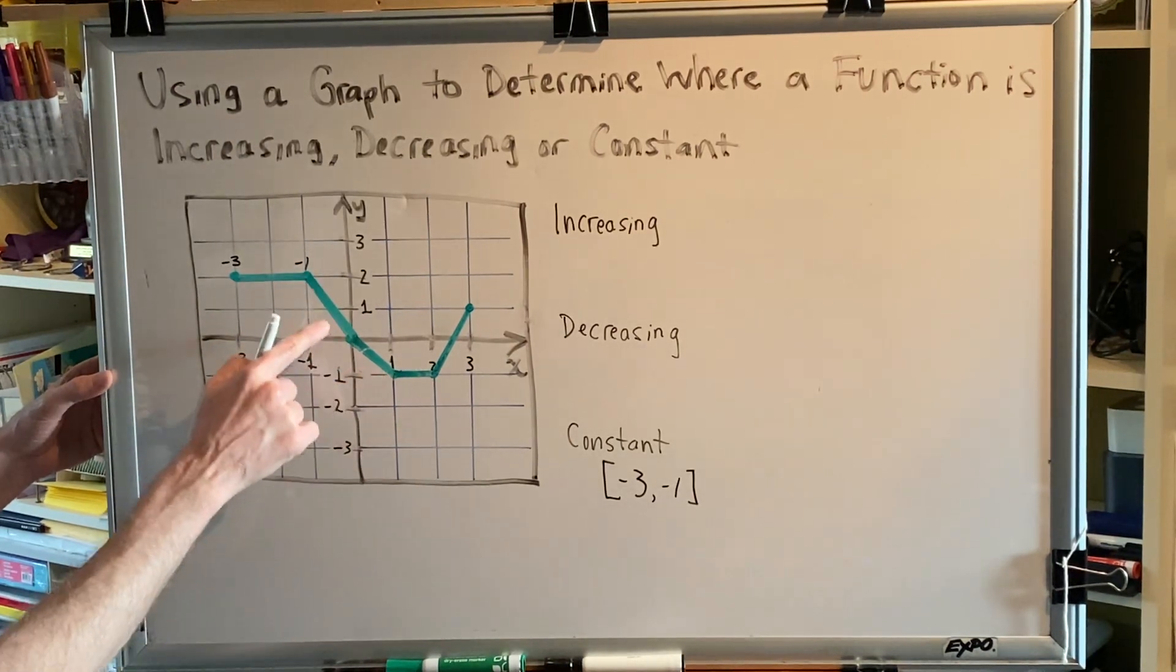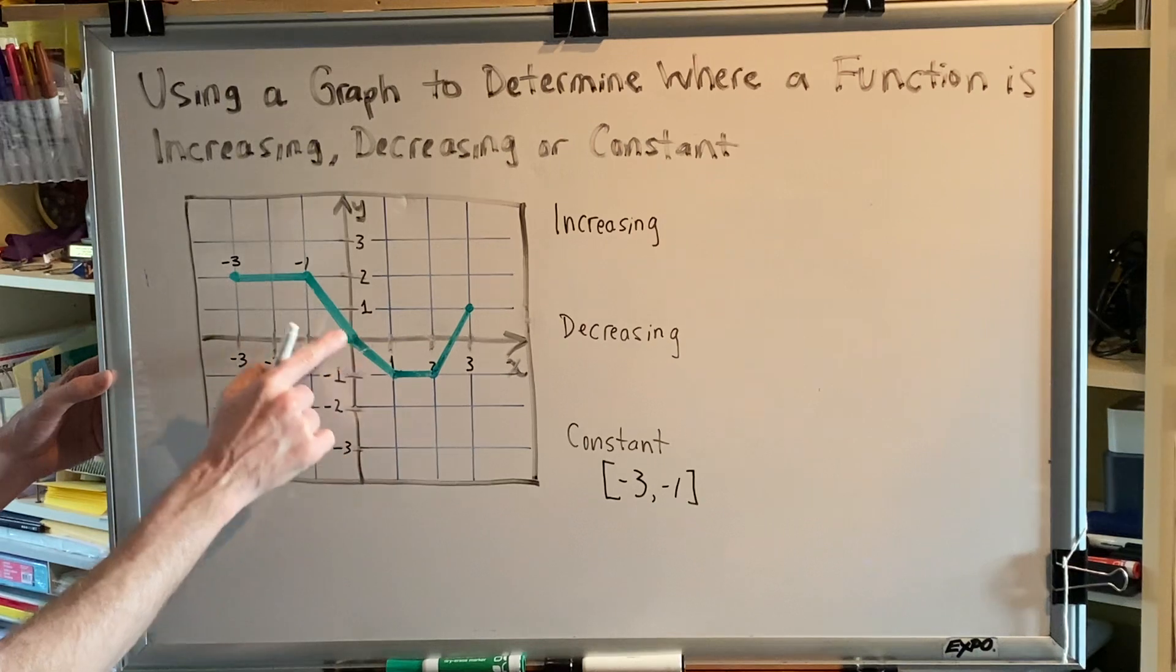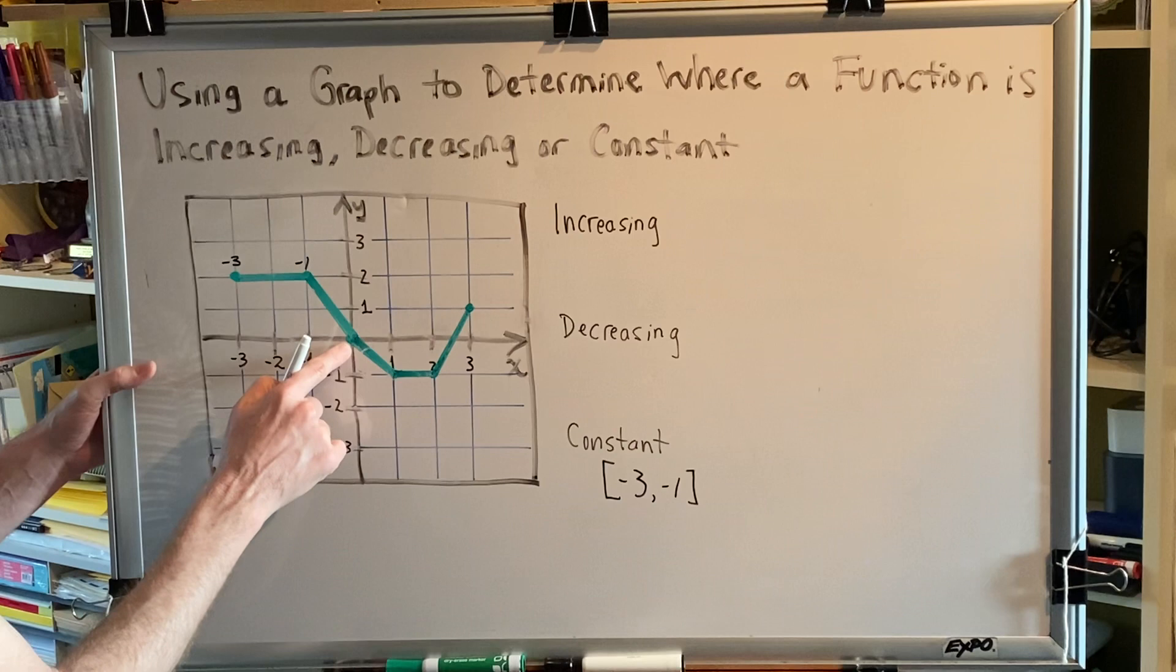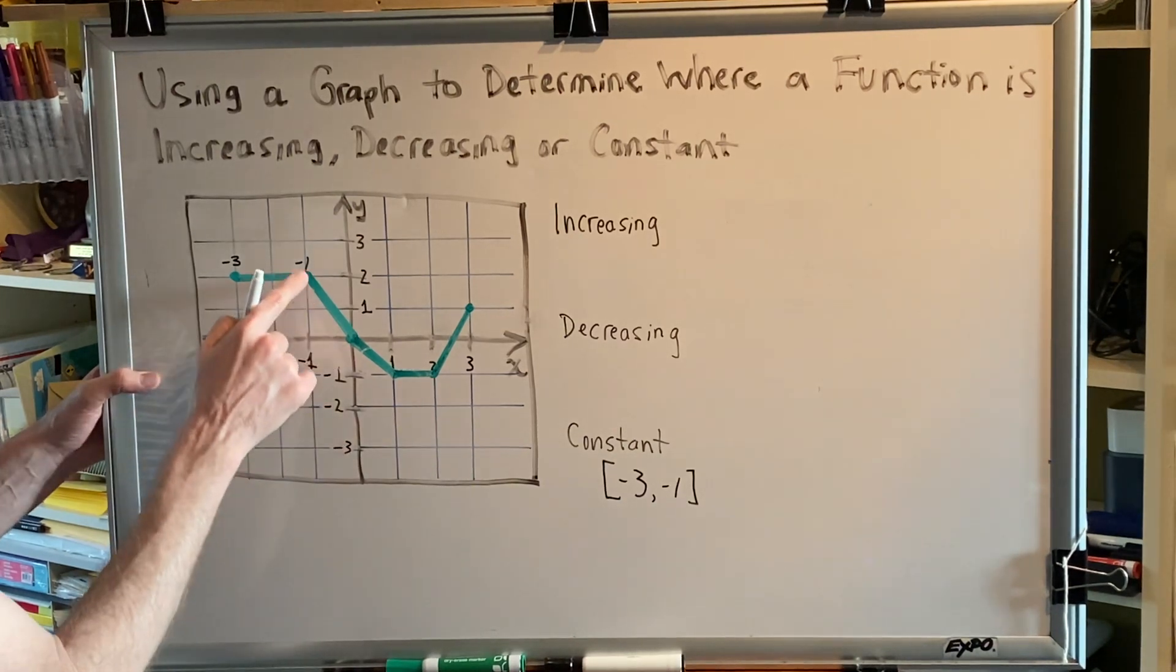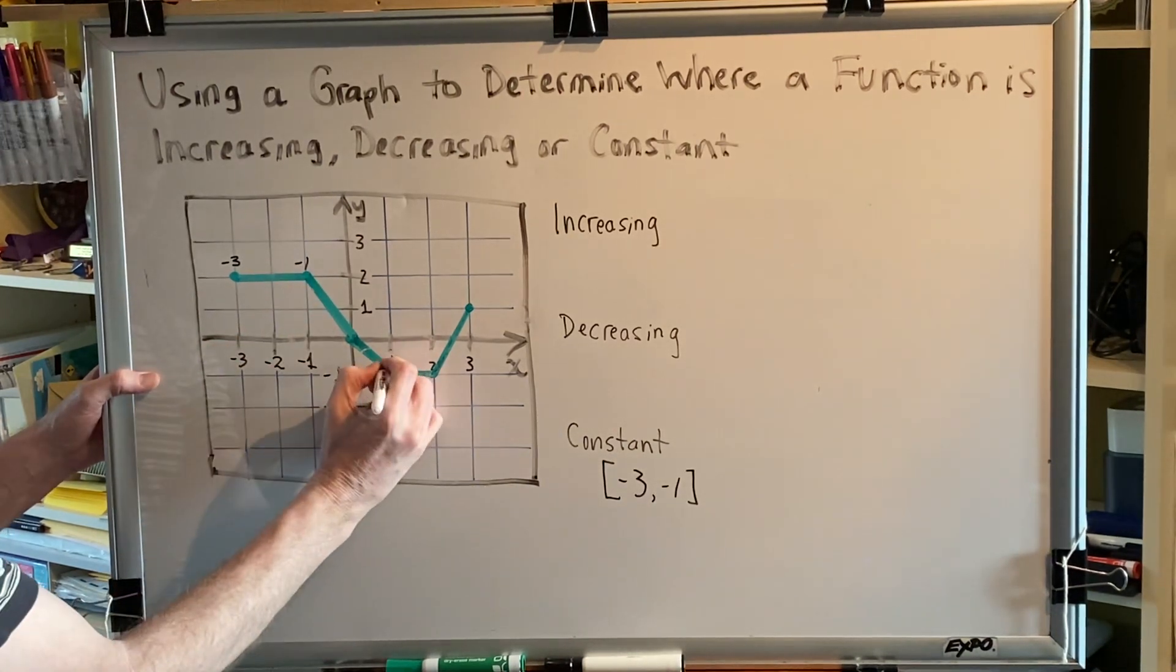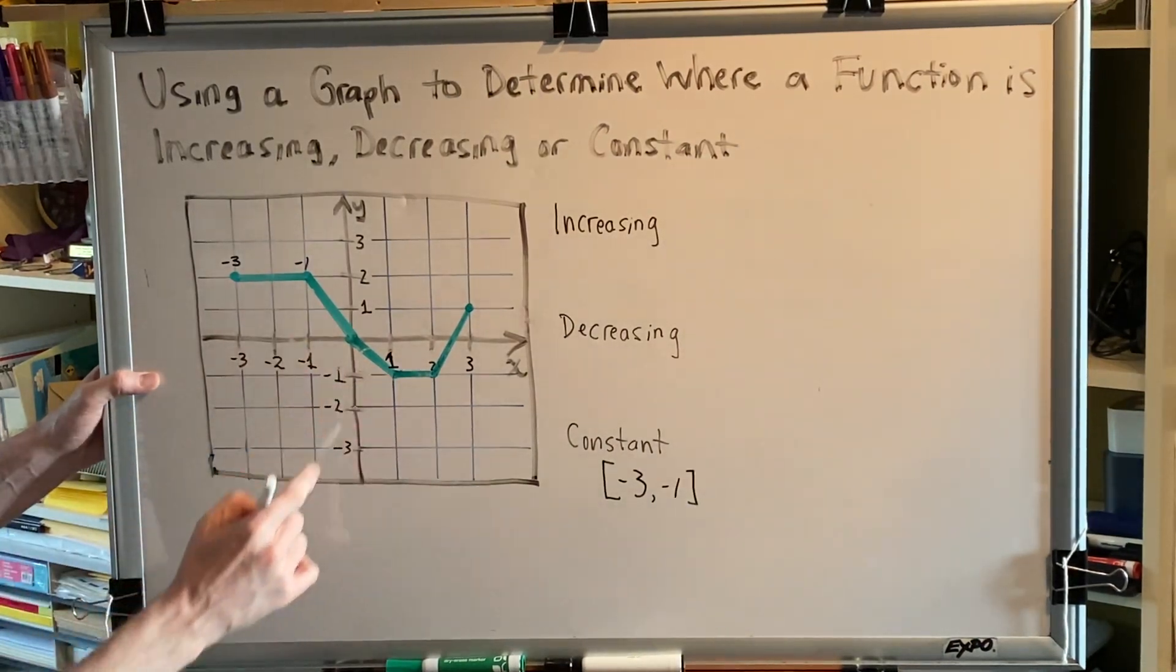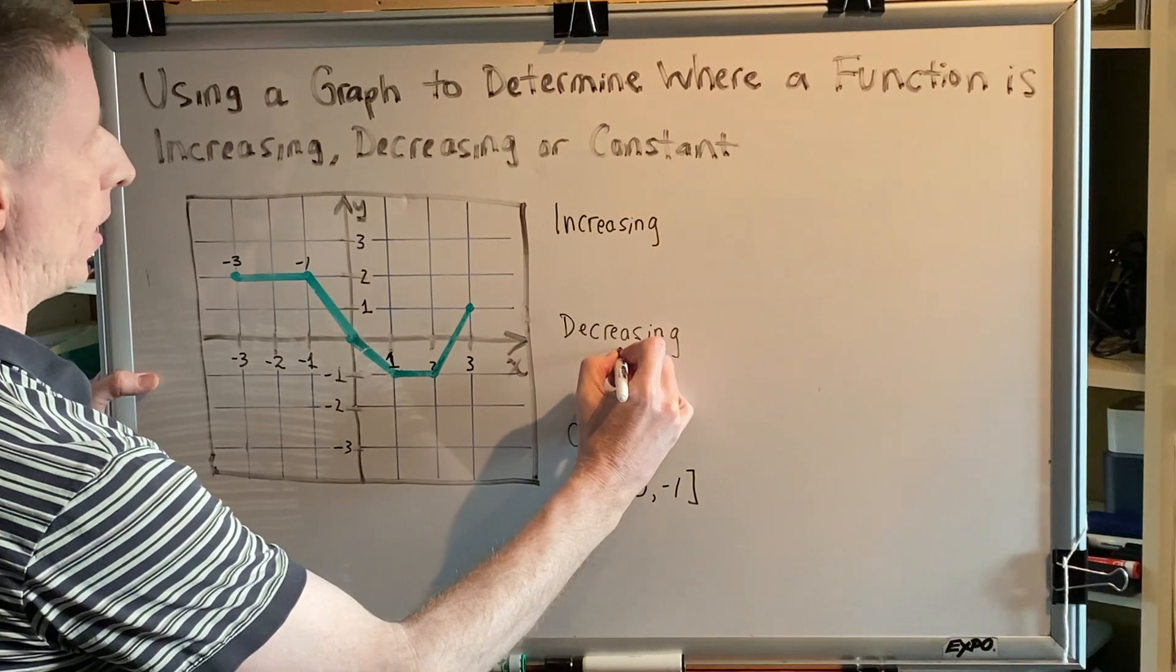But it is decreasing on either side and therefore we do not pay any attention to the point with the x-coordinate of zero. We simply note that we are going from an x-coordinate of negative one to an x-coordinate of positive one, and this is our next interval of decreasing.